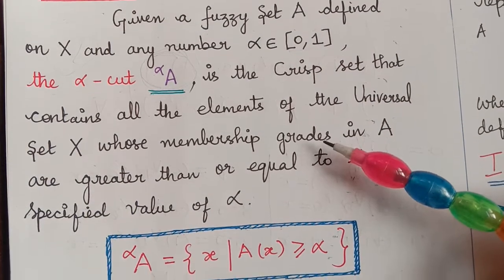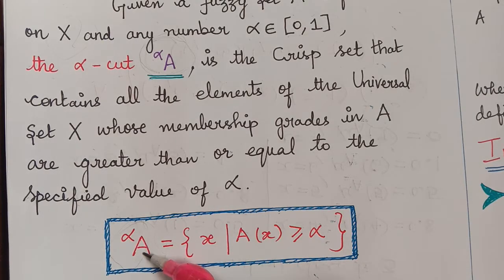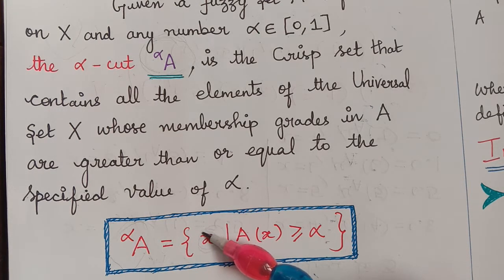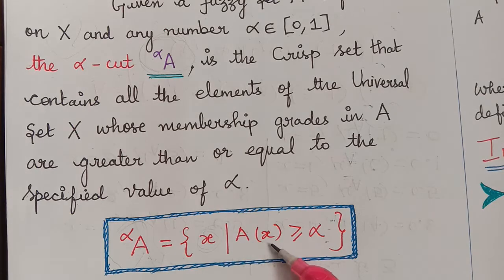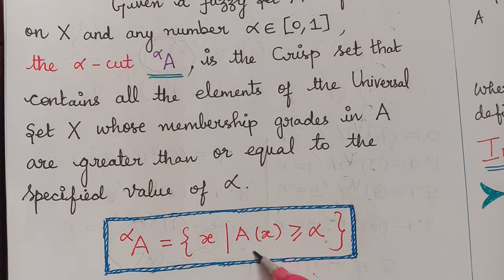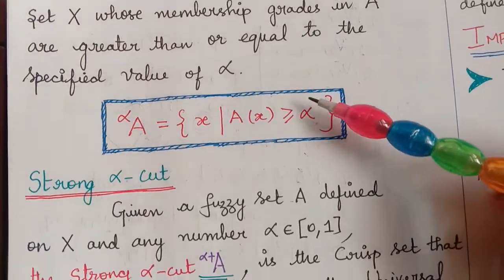The alpha cut of a fuzzy set is a crisp set that contains all elements of the universal set X whose membership grades in fuzzy set A are greater than or equal to the specified value of alpha. Before seeing an example, we will also see what strong alpha cut is.